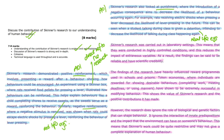The evaluation points — AO3 — are then presented in subsequent paragraphs and offer a structured evaluation of the strengths and limitations of Skinner's research. Each evaluation point follows a point-explain-consequence structure, which enhances the clarity and depth of the response. We can see from the first evaluative paragraph that it identifies the point — the strength that the research was carried out in lab settings. It then explains this, meaning the experiments were highly controlled and reduces the impact of extraneous variables. And it gives the consequence that as a result, the findings can be said to be reliable.